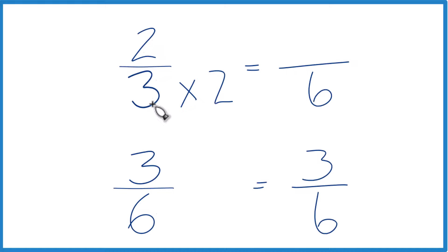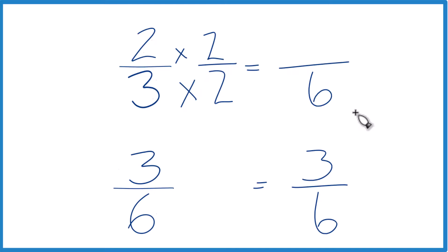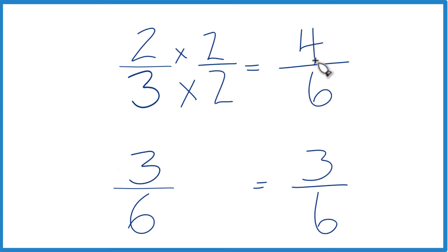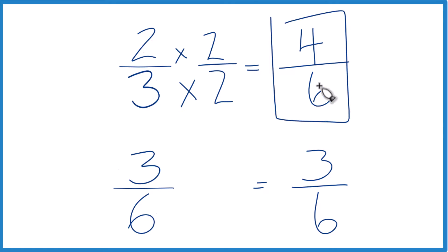Because we multiplied the denominator by two, let's multiply the numerator by two as well. Two over two is just one, so we don't change the value, just the representation. Two times two is four, and four-sixths is the same as two-thirds — they're equivalent fractions. Now you can see that four is greater than three. We have the same denominator, so compare the numerators: four is greater than three, so four-sixths is greater than three-sixths.